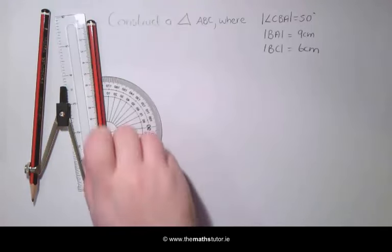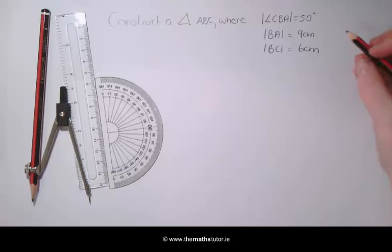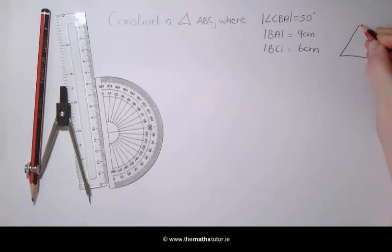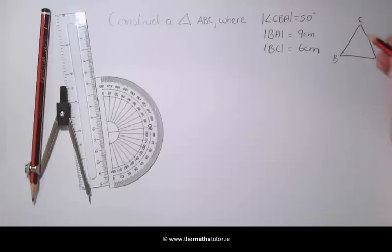The first thing we are going to do is draw a rough sketch of our triangle. The angle at B is going to be 50 degrees, BC is going to be 6 cm and BA is going to be 9.